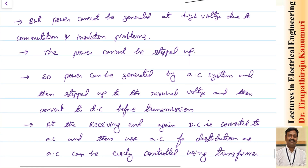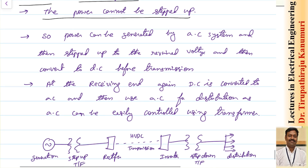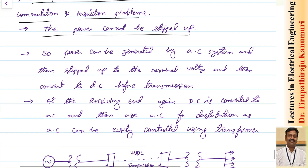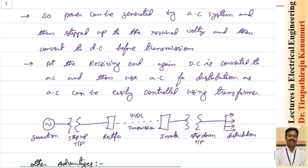However, there are disadvantages: power cannot be generated at high voltage due to commutation problems and insulation problems. Also, power cannot be stepped up or stepped down in DC — that is a disadvantage — but in AC it is possible because there is a device called the transformer.